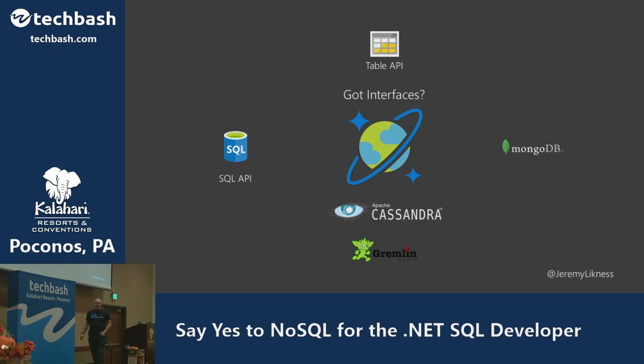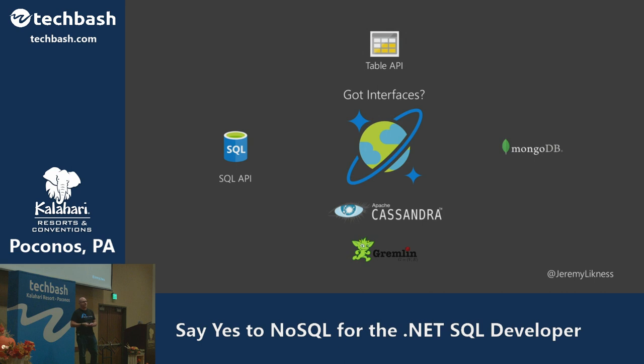Another unique aspect of Cosmos DB is it handles many different interfaces supporting the four main types of NoSQL databases. Some are proprietary — the SQL API is a document database that lets you use SQL syntax to query it, leveraging existing SQL knowledge. Some APIs like MongoDB have existed for years. By supporting the MongoDB interface, existing MongoDB applications can be hosted in Cosmos DB with minimal changes, and developers with MongoDB knowledge can bring those skills to Cosmos DB development.